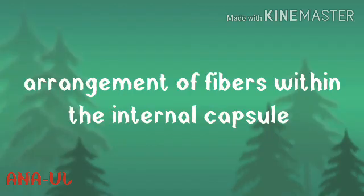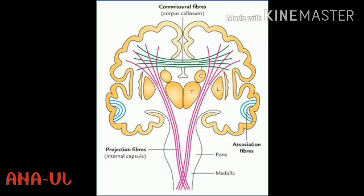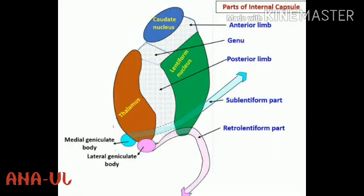Regarding the arrangement of fibers within the internal capsule: fibers to and from the anterior part of the frontal lobe pass through the anterior limb. Fibers to and from the posterior part of the frontal lobe and greater part of the parietal lobe occupy the genu and posterior limb. Fibers to and from the temporal lobe occupy the sublentiform part, whereas those to and from the occipital lobe occupy the retrolentiform part.